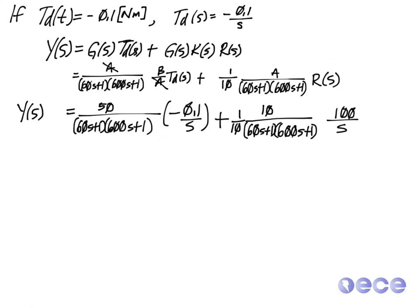Substituted A equals to 10 and B equals to 60, which were the gains that we chose. And tau1 equals 60, tau2 equals 600.